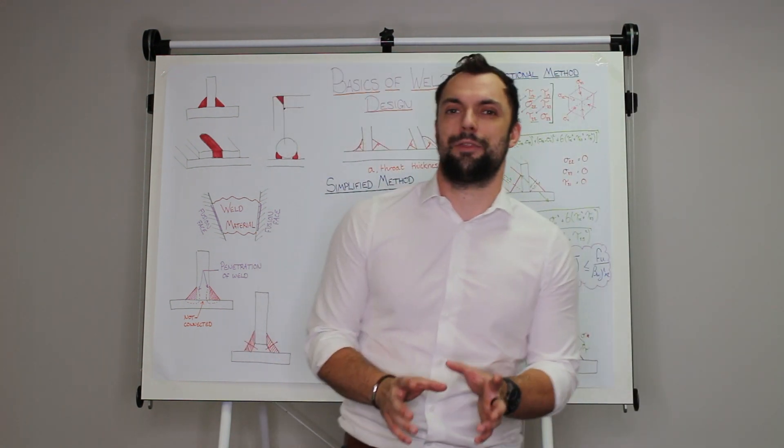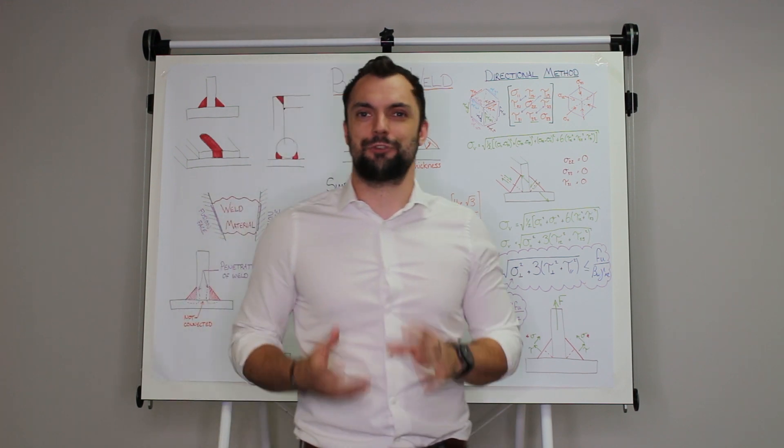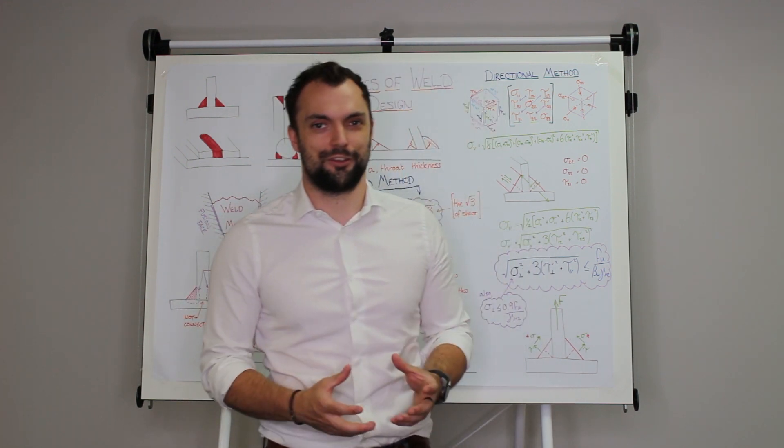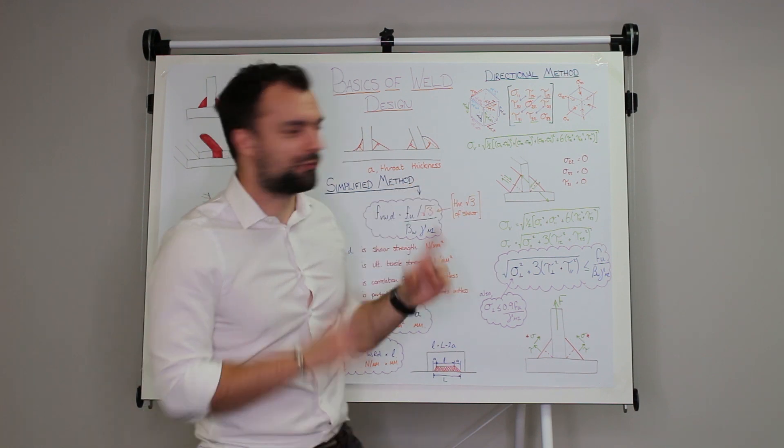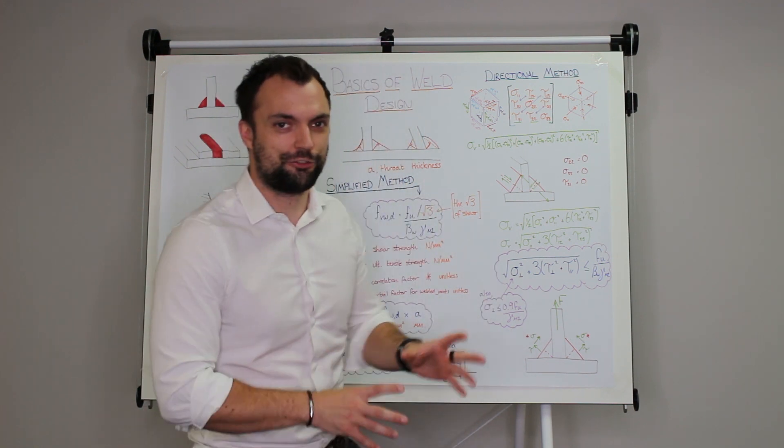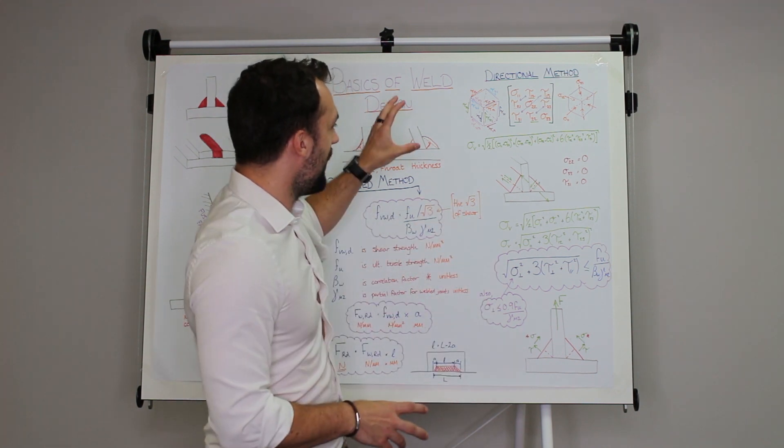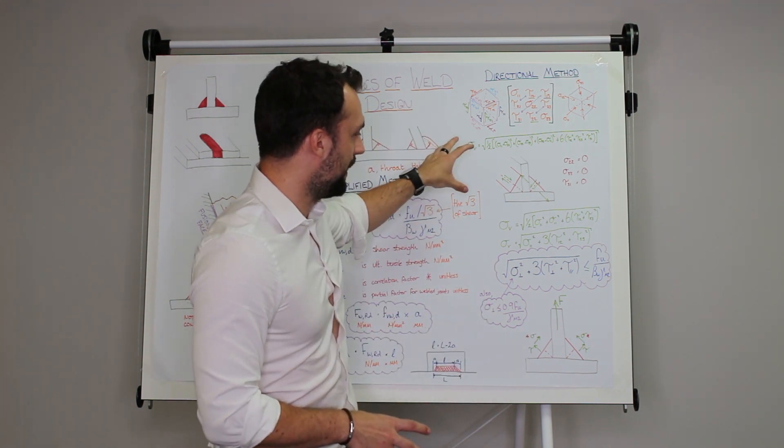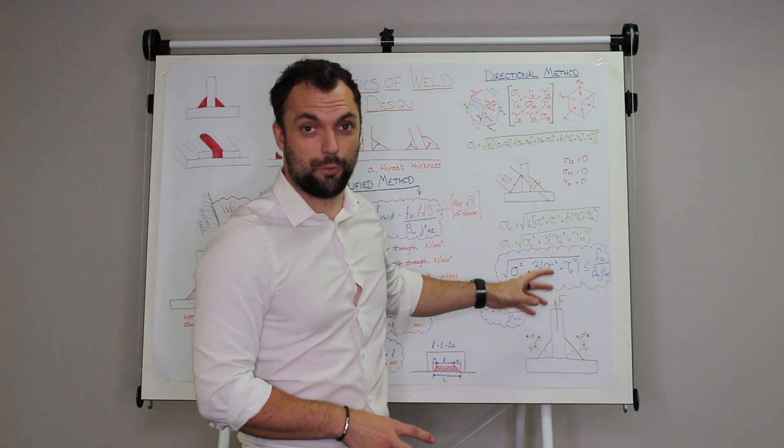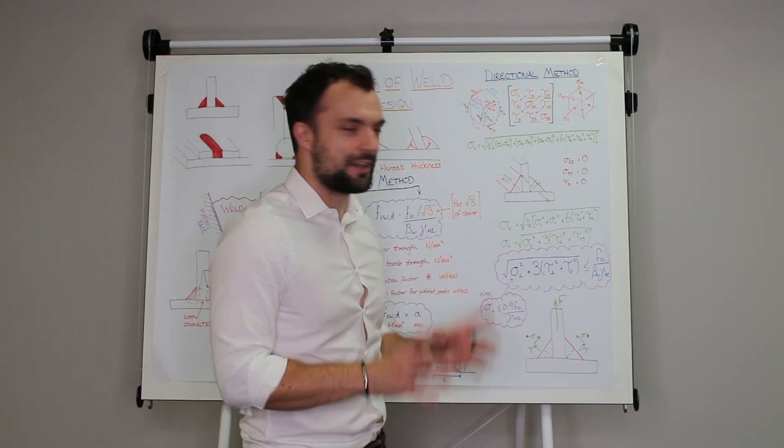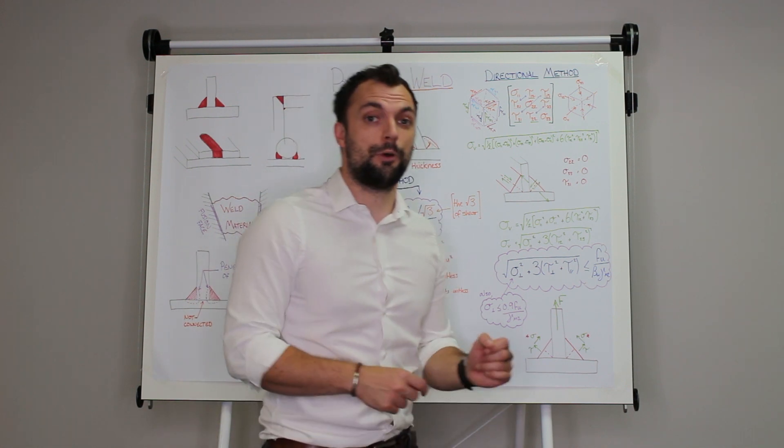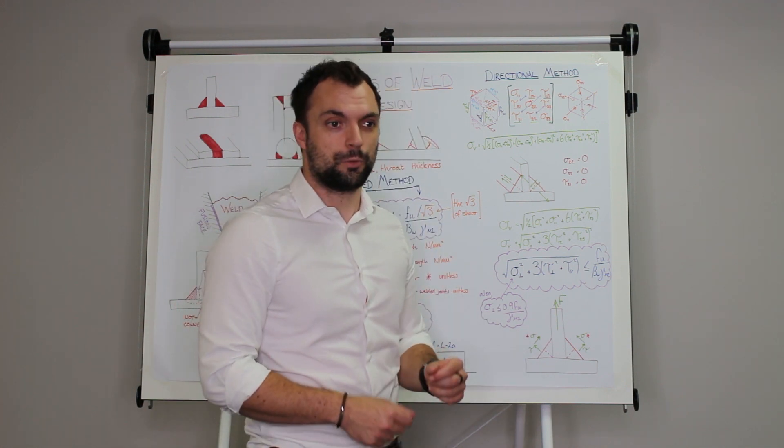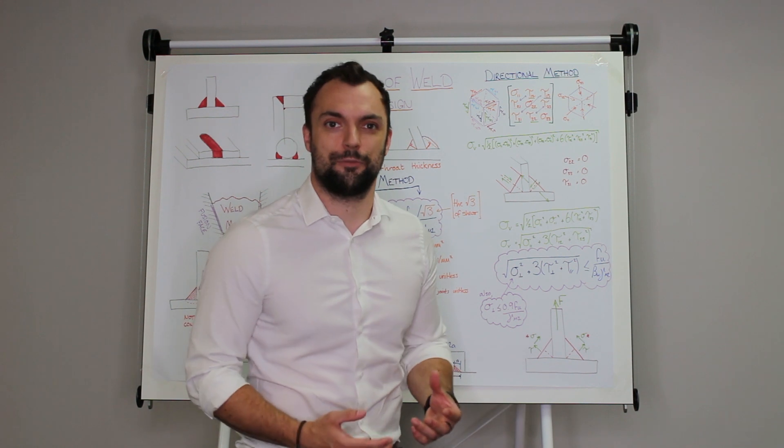That's the simplified method that treats every bit of stress that goes through that weld as though it's shear stress and that's why you apply this root three to the whole thing. But we're just going to recap on a little bit of Cauchy stress tensor and von Mises stresses and this will explain the directional method for weld design which is slightly more complex, a lot more complex, but will tend to give you a more economical design. It will get you more strength out of the same bit of weld.